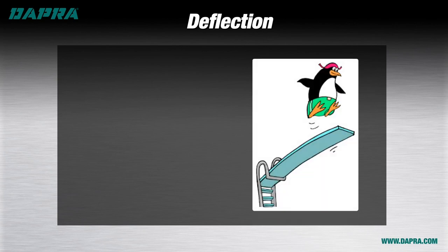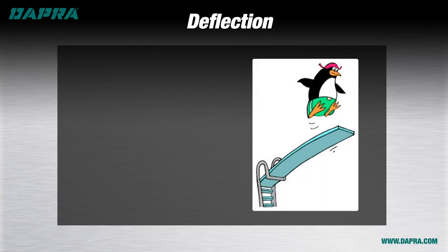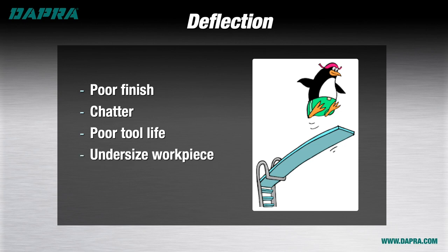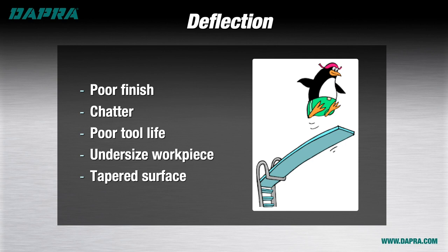There are times in life when we want a little springiness in the tools we're using, but with cutting tools that's generally not the case. Deflection is the number one problem with long-reach milling and it can cause a variety of problems: poor finish due to chatter, damage to our cutting tool or shorter tool life, and parts coming out undersized or tapered due to the cutting edge pushing away from the part profile.